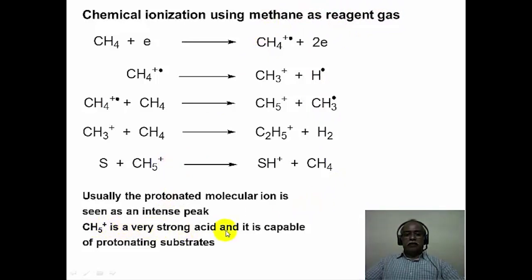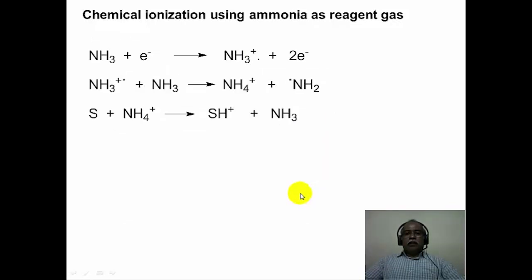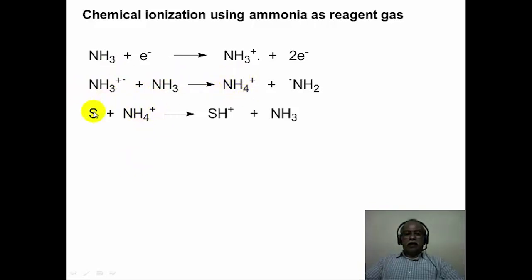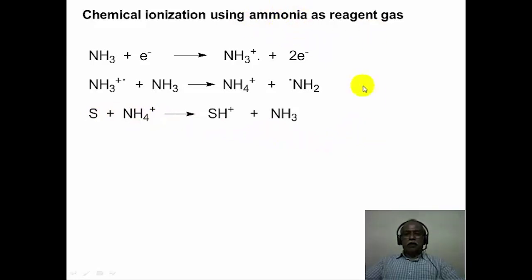CH₅⁺ is capable of protonating the Lewis basic sites of the substrate, thereby producing the protonated substrate molecule. When ammonia is used as a reagent gas, ammonia gets ionized to the ammonia cation radical, which reacts with another molecule of ammonia to produce an ammonium ion. The ammonium ion can either transfer a proton to the substrate producing the protonated substrate, or an adduct can be formed between the ammonium ion and the substrate, producing a mass 18 units more than the substrate because of adduct formation.